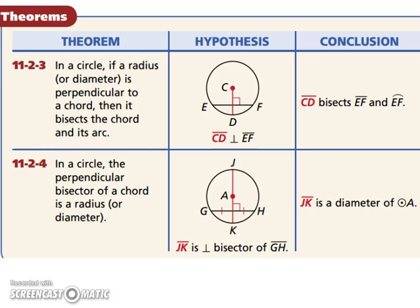In a circle, if a radius or diameter is perpendicular to a chord, then it bisects the chord and its arc. So you have a chord, EF. Then you have a radius, DC. If they are perpendicular, then CD cuts this EF in half. So that means this little piece off to the right and the little piece off to the left here, they're both congruent.